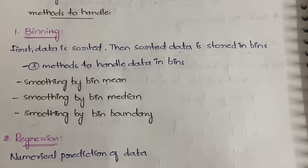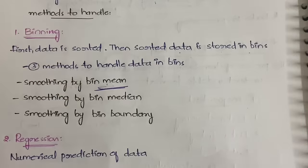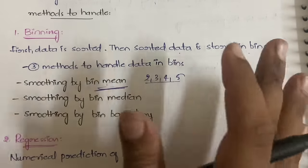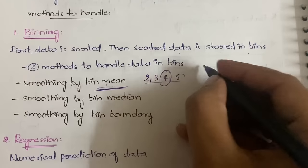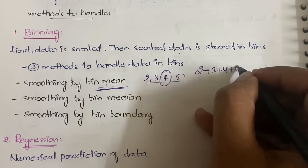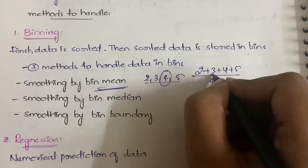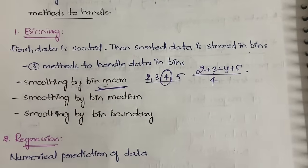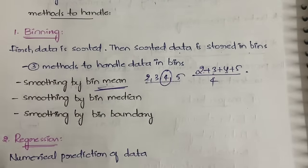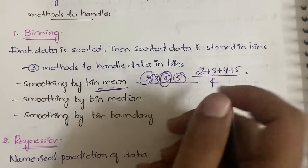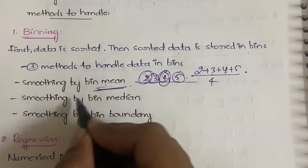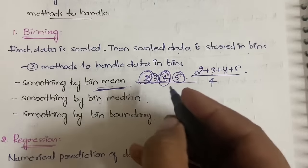In smoothing by bin mean, all values in the bin are replaced by the mean of the bin. For example, if a bin contains 2, 3, 4, 5 and 4 is the error value, the mean is 14/4 = 3.5, and all values are replaced with that mean. In smoothing by bin median, values are replaced using the median of the bin.